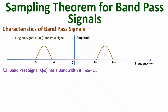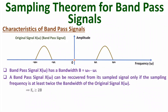In the sampling theorem, what we do is use a sampling frequency. To extract the original signal from the sampled signal, the sampling frequency should be at least twice the bandwidth of the original signal x of omega. So here bandwidth is omega H minus omega L. For band pass signals, to apply the sampling theorem, the sampling frequency should be greater than or equal to 2B, where B is the bandwidth of the band pass signal.